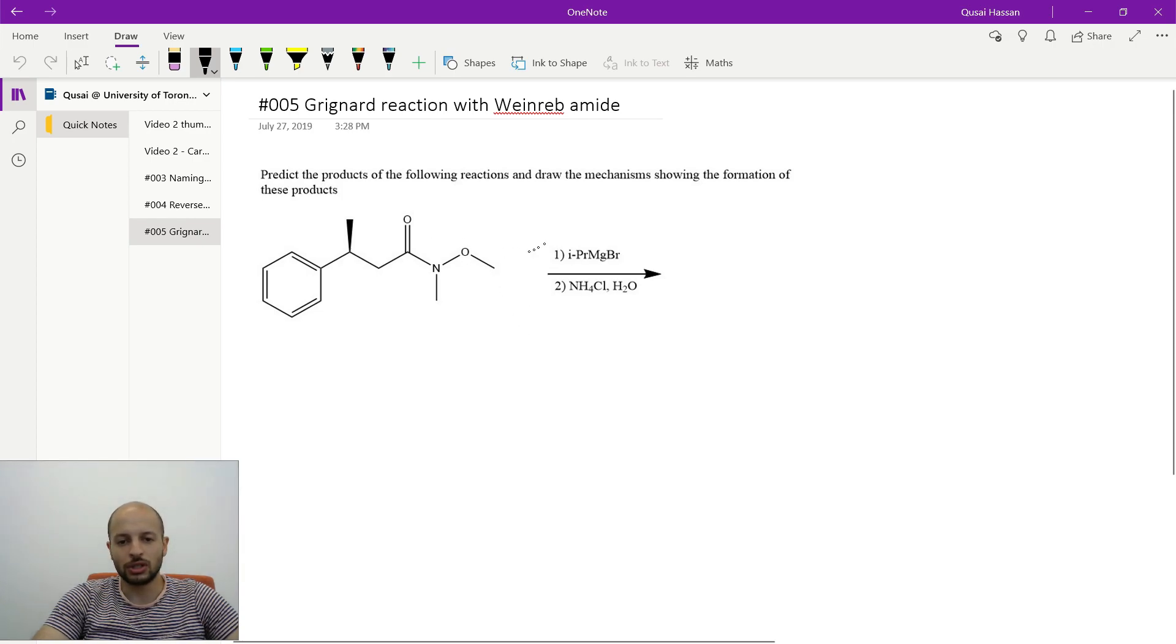So the first thing you'll notice is that we have a Grignard, but what type of carbonyl do we have here? Well, this carbonyl is actually a special type of carbonyl where it's an amide, but then the nitrogen is also linked to an oxygen, and it's called a Weinreb amide. And this is going to come into play in a second. So we have our isopropyl Grignard reagent, which is going to be something kind of like this.